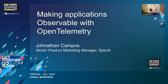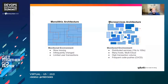When it comes to making applications observable with OpenTelemetry, we want to first understand why we want to make these applications observable. It happens to be with the new architectures that we are leveraging today with our deployments. Historically, we've always started with a monolithic architecture where these applications were deployed in a specific client-server type deployment, and we found them to be very slow-moving with infrequent changes and limited user transactions. Things were kind of housed in one place and not necessarily distributed.